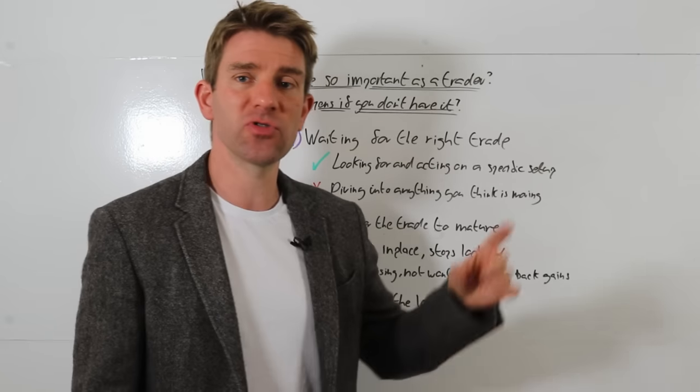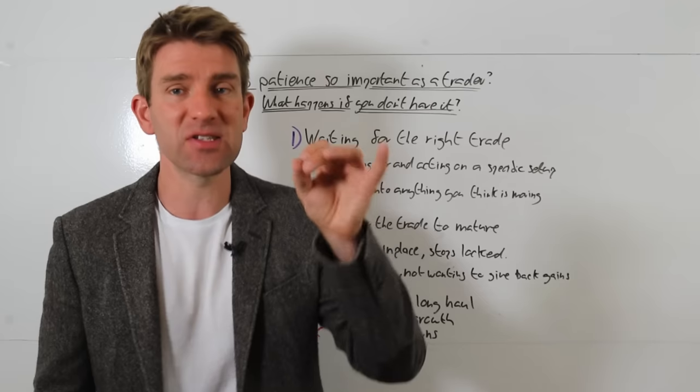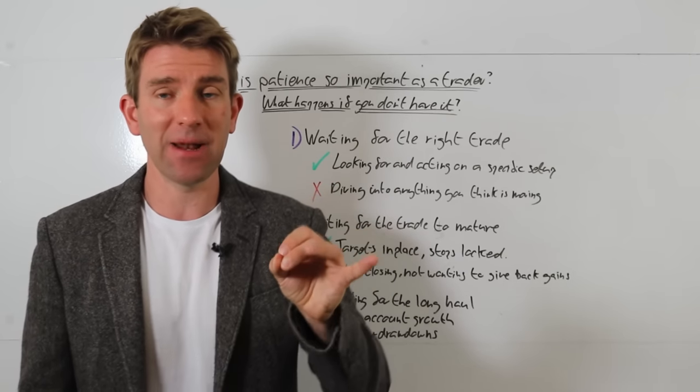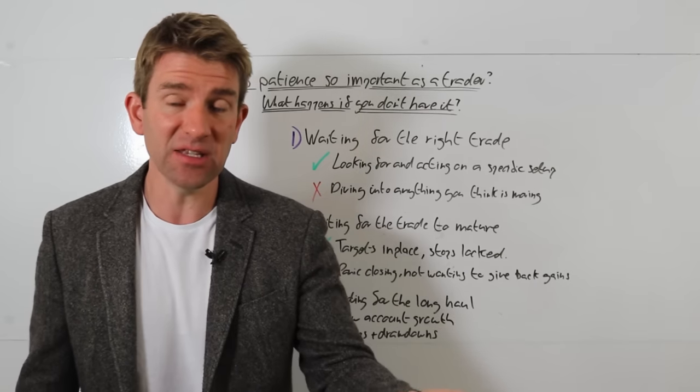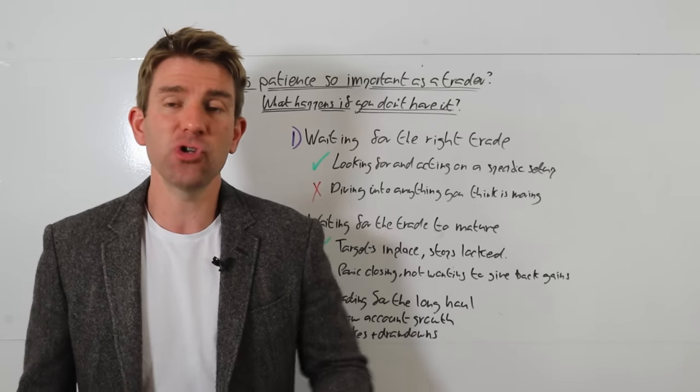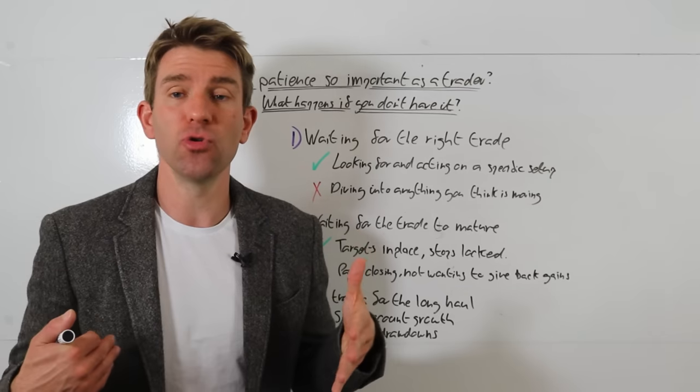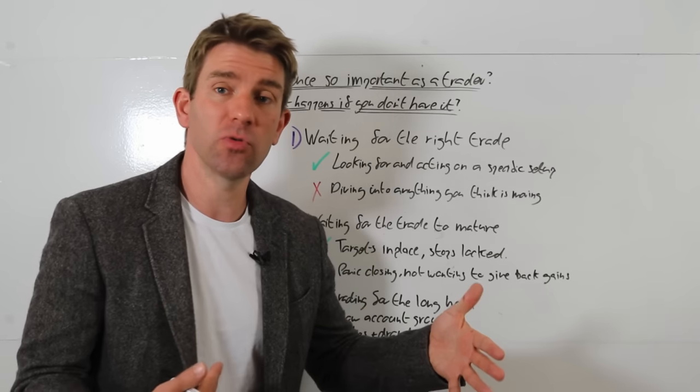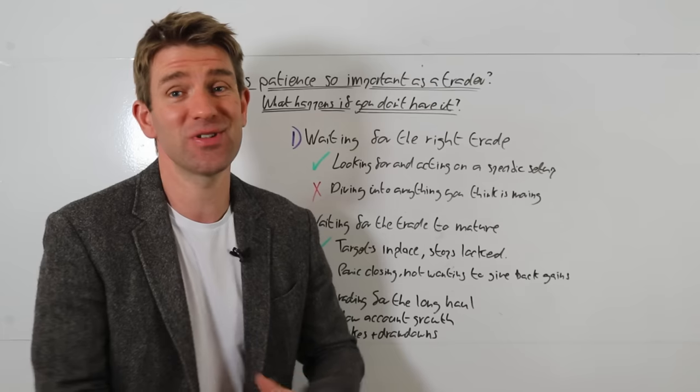So one is getting into the trade, being patient for the right setup that fits our trading plan. The second thing is once we're actually in the deal, is being patient and letting the trade mature. So what do you mean by letting it mature? That means letting it go to your stop loss or letting it go to your target. Preferably of course we all want it to go to our target rather than our stop, but you get the point.